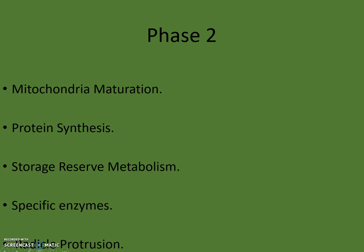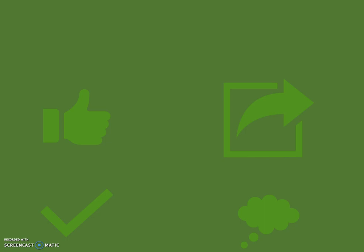The radicle comes out and grows downward, then the plumule comes out and grows upward. Up to radicle emergence only is considered the germination phase; all subsequent processes come under seedling establishment. In our next video we will cover seedling establishment and morphology of seedling establishment. That's all about the physiology of germination. Thank you for listening — if you like this video, give us a thumbs up, please subscribe to our channel, share this video, and leave your valuable comments for improvement.